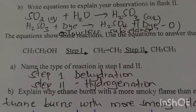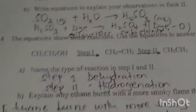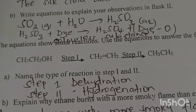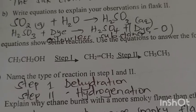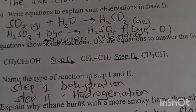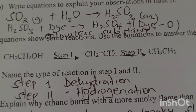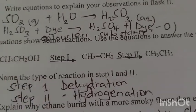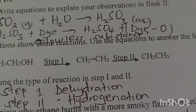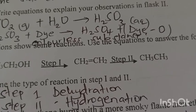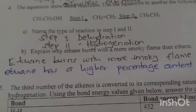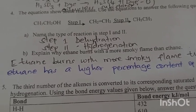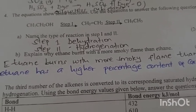Write equations to explain your observation in flask two. Sulfur dioxide plus water gives sulfurous acid, and then sulfurous acid plus dioxygen gives sulfuric acid. That results in a colorless substance.